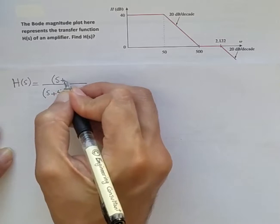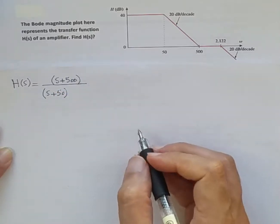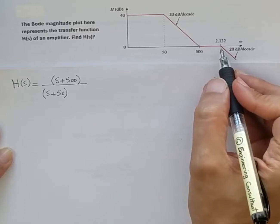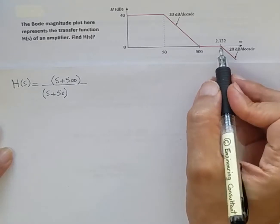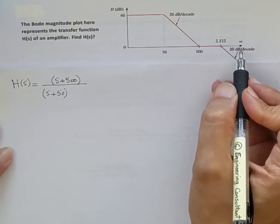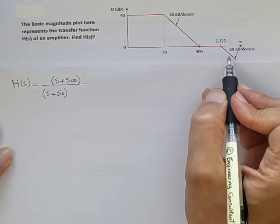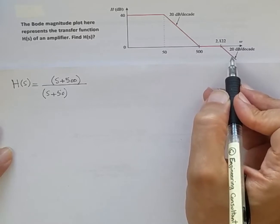That continues up to the point we hit the frequency of 2122 radians per second. After that point we can see the magnitude is going to resume dropping again at the rate of 20 dB per decade.